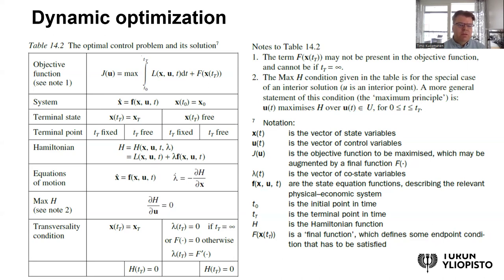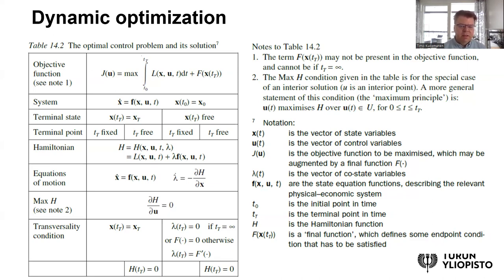The constraints include what we usually call state variables and control variables. Sometimes this type of dynamic optimization problem is also called an optimal control problem, because we have control variables that can be utilized. For example, in this extraction model, the monopoly or firms can decide how much of the resource to extract at a given point in time, and this determines the extraction path.